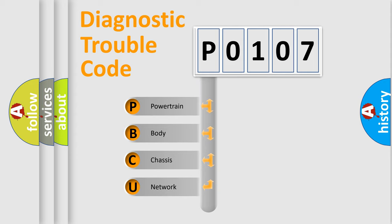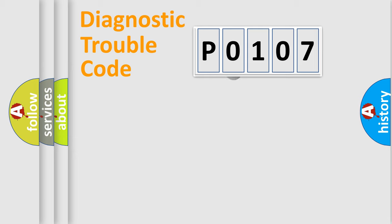We divide the electric system of automobile into four basic units: powertrain, body, chassis, and network. This distribution is defined in the first character code.